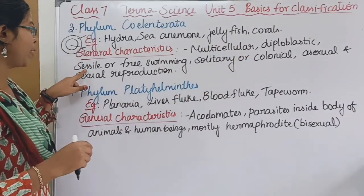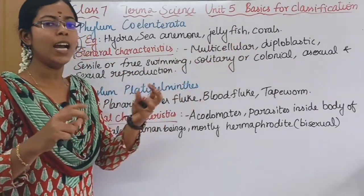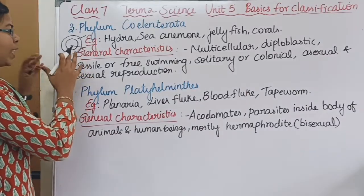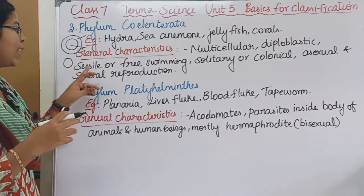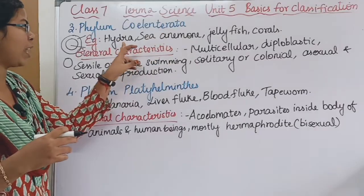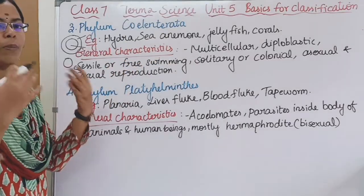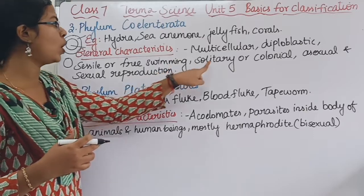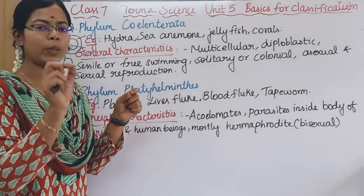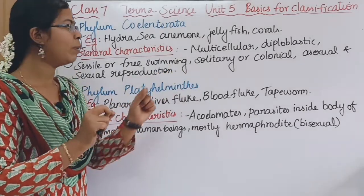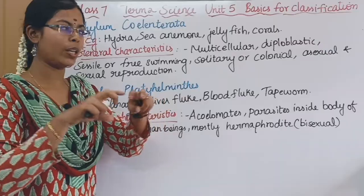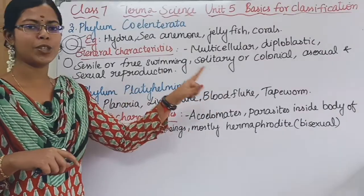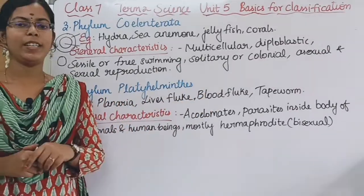Some are sessile, like corals, which are fixed to a substrate. Jellyfish are free-swimming. So Coelenterata can be sessile or free-swimming. They can also be solitary or colonial. The method of reproduction is both asexual and sexual.